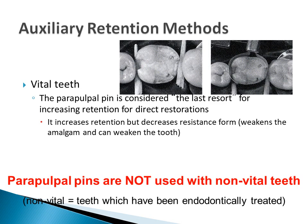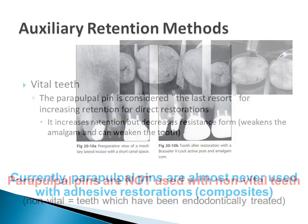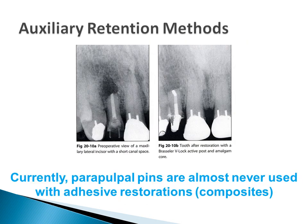Of these methods, the parapulpal pin is considered the last resort. If we have another method for retention, we will use the other methods. Why? Parapulpal pins increase retention but decrease resistance form. Also, the placement can be tricky in some teeth when minimal tooth structure remains. These radiographs show parapulpal pins in anterior teeth. The picture on the left, tooth number 7, shows pins used with composite in an endodontically treated tooth. Today, parapulpal pins are almost never used with adhesive restorations.